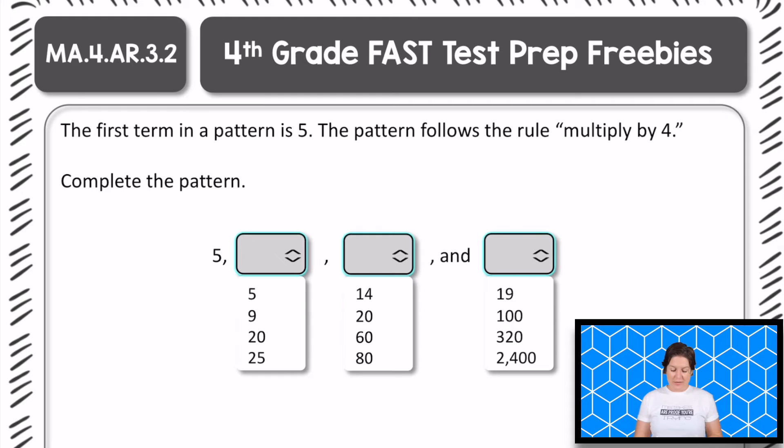Welcome back fourth grade. So this one says that the first term in a pattern is 5. Okay, the first term in a pattern is 5. The pattern follows the rule multiply by 4. So here we go.